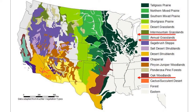Going back to this simplified Küchler map of rangeland vegetation types, what we're going to look at today is the Intermountain Bunchgrass type, in the areas right up here in the Pacific Northwest. We're also going to look at the California annual grasslands on the west coast. On the edges of the California grasslands are the oak woodlands, and there are also some oak woodlands in Texas that will come out of this discussion. So those are the three types we're going to look at today.